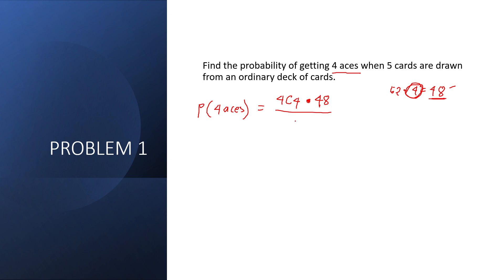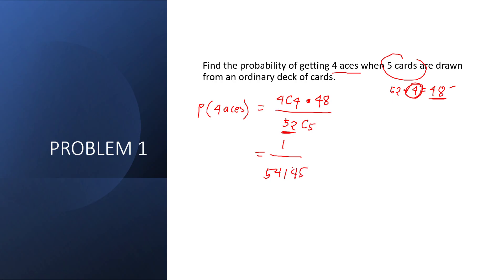We have 52 combination 5 as the total sample space — 52 total cards choosing 5. Computing: four combination four times 48 combination one, over 52 combination five, equals 1 over 541,145. This is how to solve problem number one: find the probability of getting four aces when five cards are drawn from an ordinary deck of cards.